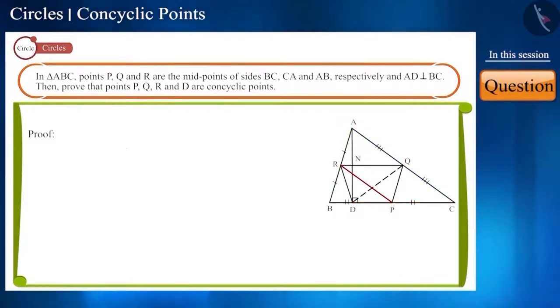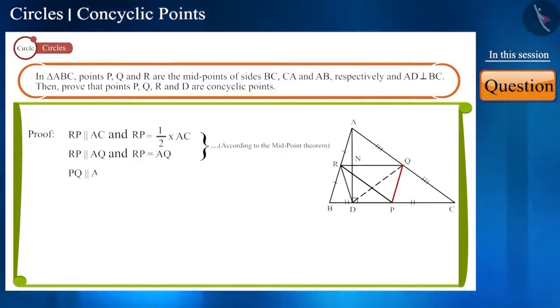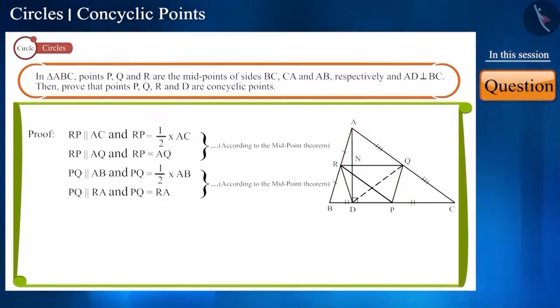According to the midpoint theorem, line segment RP will be parallel to side AC and it will be equal to half of it, which means it will be equal to AQ. And line segment PQ will be parallel to side AB and will be equal to half of it, that is, it will be equal to RA.